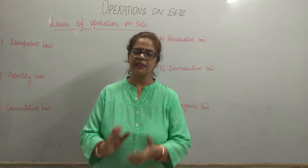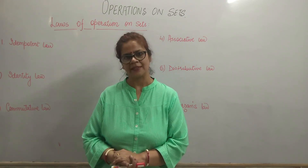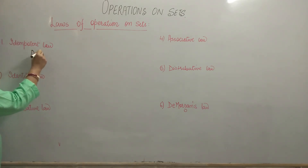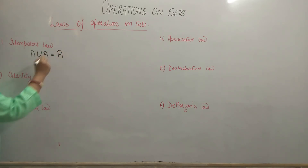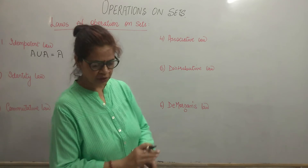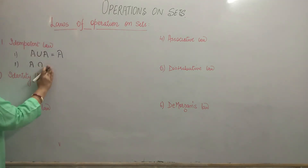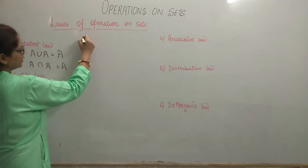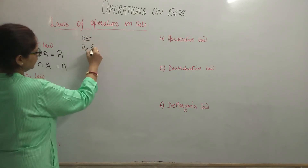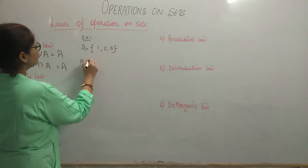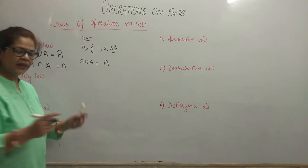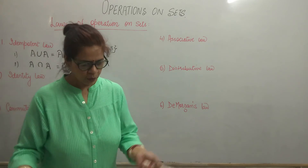Let us now study some laws on operations on sets. The very first law is the idempotent law. Idempotent law says: A union A is equal to A, and A intersection A is also equal to A. For example, if set A = {1, 2, 3}, then A union A gives {1, 2, 3}, which is A only. And common elements of A with A are also 1, 2, 3 — that is A itself.